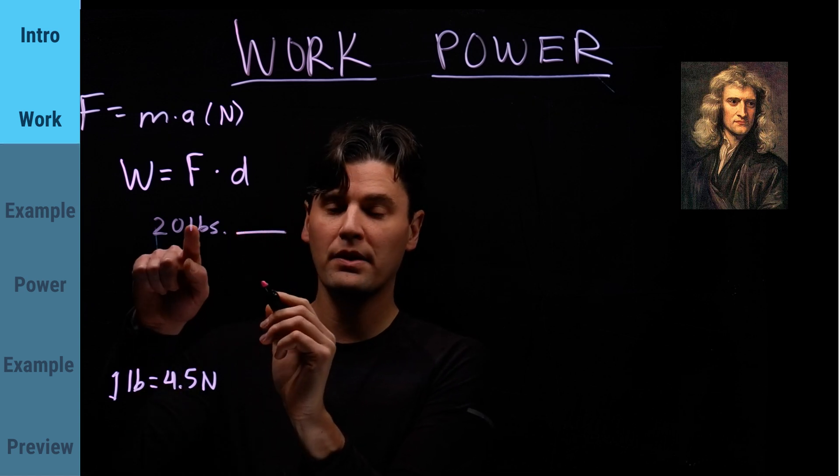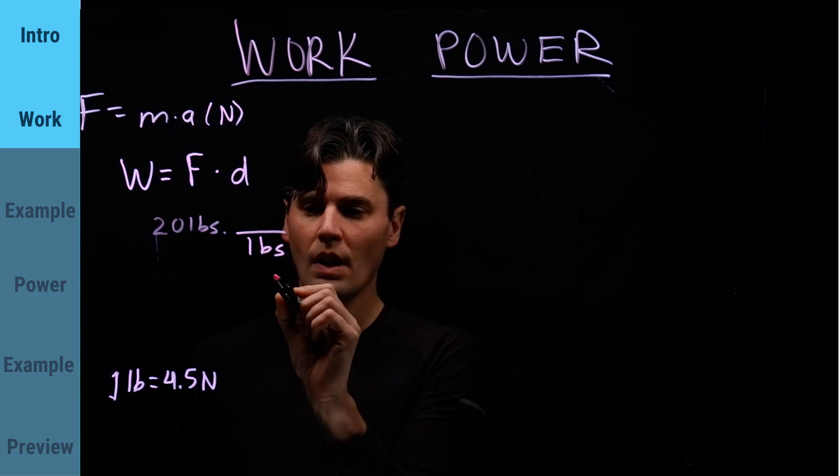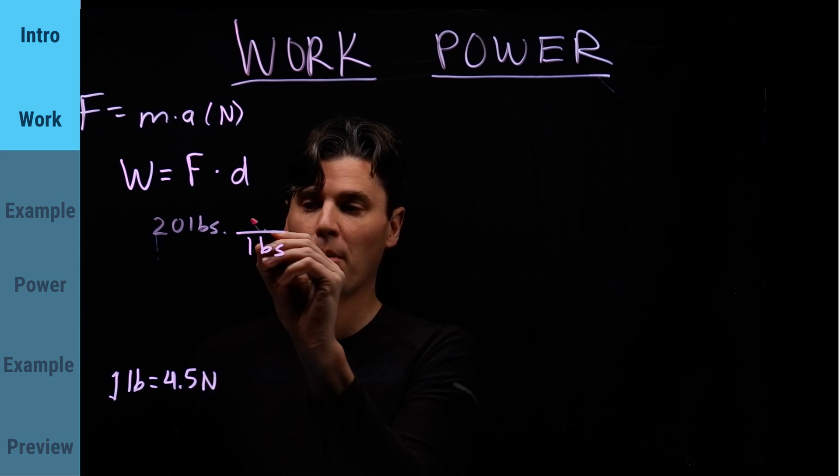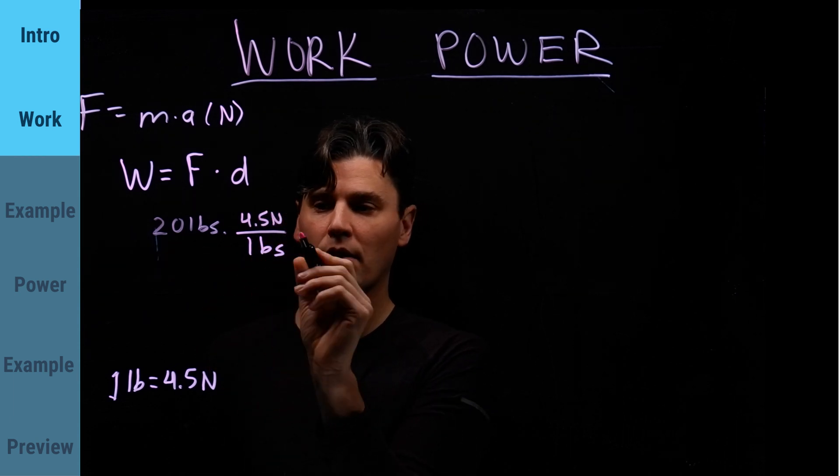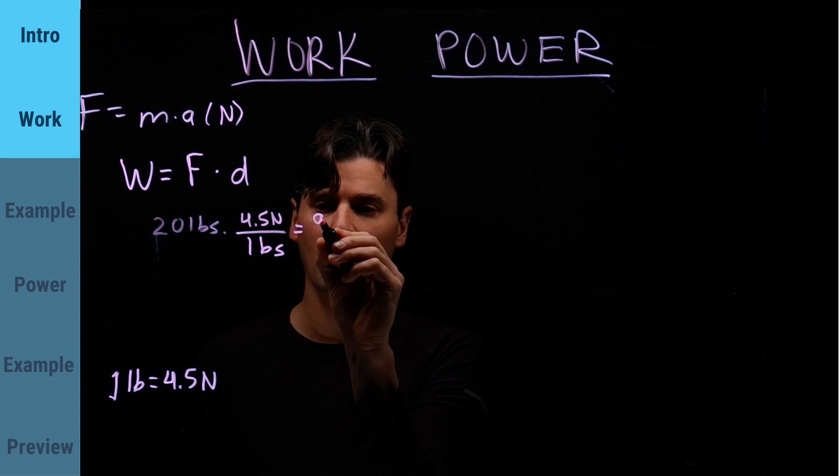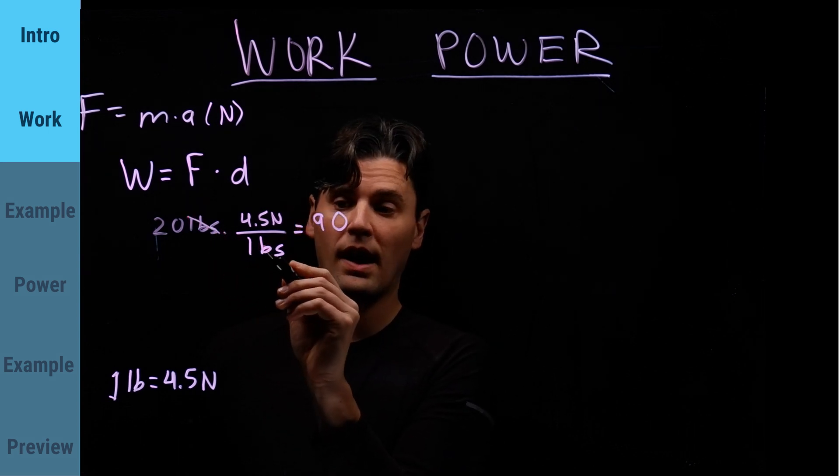We have pounds on the top, so we'll put pounds on the bottom. One pound is 4.5 newtons. We'll multiply across, 4.5 times 20 is 90, then pounds will cancel out, and we get 90 newtons.